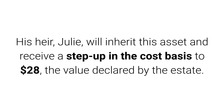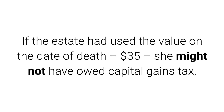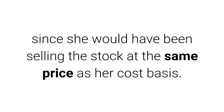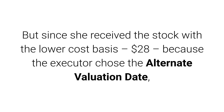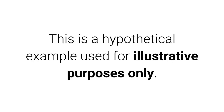His heir Julie will inherit this asset and receive a step-up in the cost basis to $28 — the value declared by the estate. Now assume that Julie sells the stock a short time later at $35. If the estate had used the value on the date of death ($35), she might not have owed capital gains tax, since she would have been selling the stock at the same price as her cost basis. But since she received the stock with the lower cost basis of $28, because the executor chose the alternate valuation date, capital gains tax on the $7 per share gain may be due.